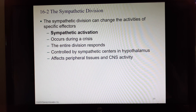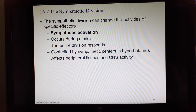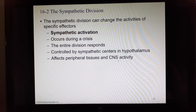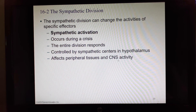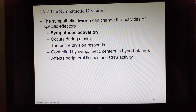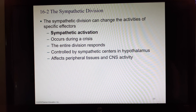In general, for the sympathetic division: preganglionic fibers are short, the ganglia are close to the spinal cord not the organ, and postganglionic fibers are long. The sympathetic division can change the activities of particular effectors; activation occurs during a crisis and the entire division responds — you can't pick and choose. It's controlled by centers in the hypothalamus. Think of the E's for sympathetic: emergency, exercise, excitement, and embarrassment — all of those will trigger the sympathetic response.